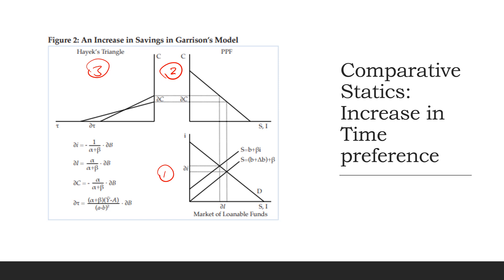So we see an increase in our supply of loanable funds as a result of our increase in time preference, and that drops our interest rate down. We see a fall there.